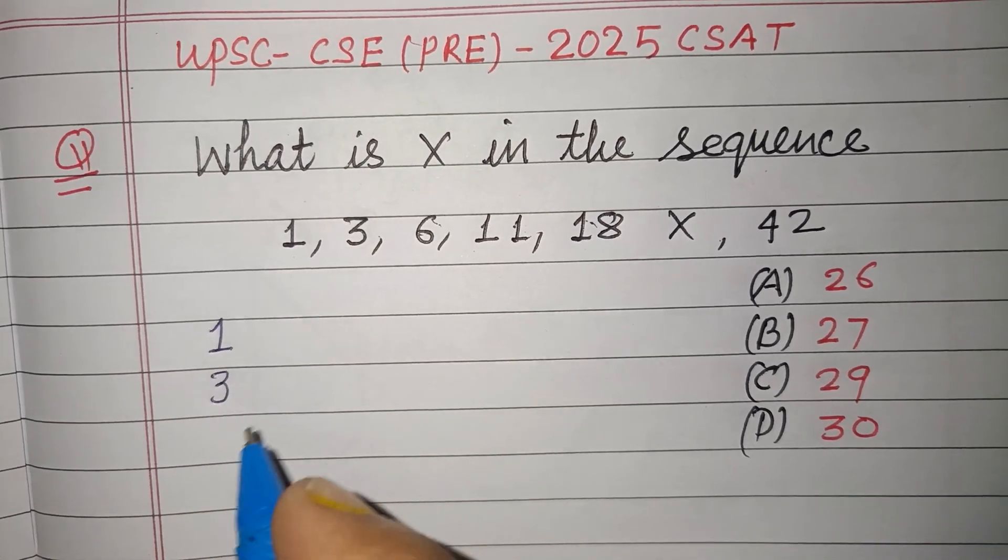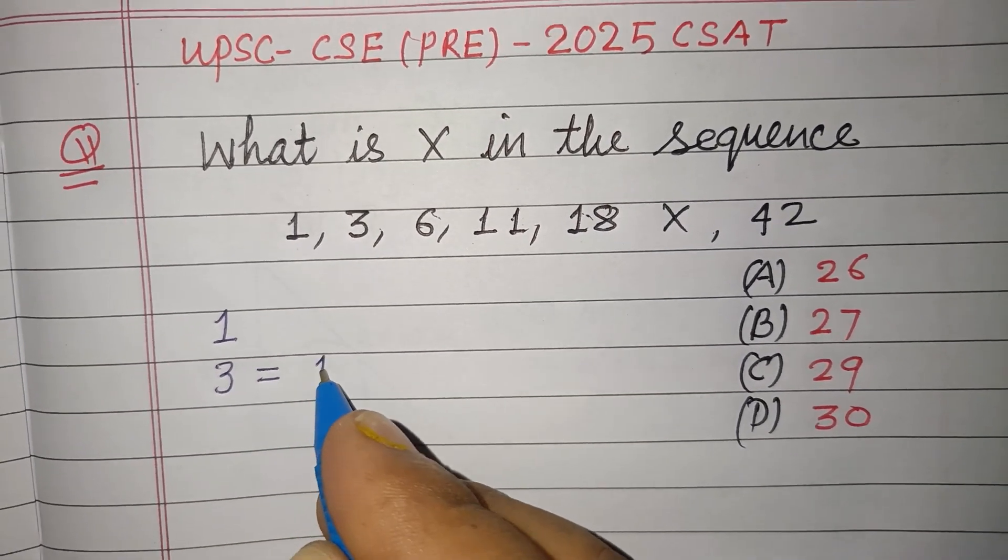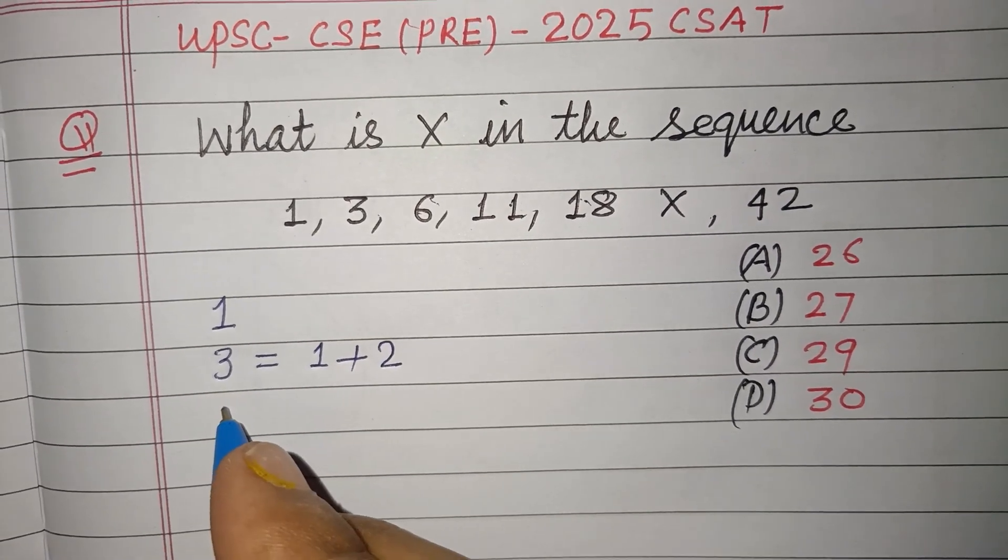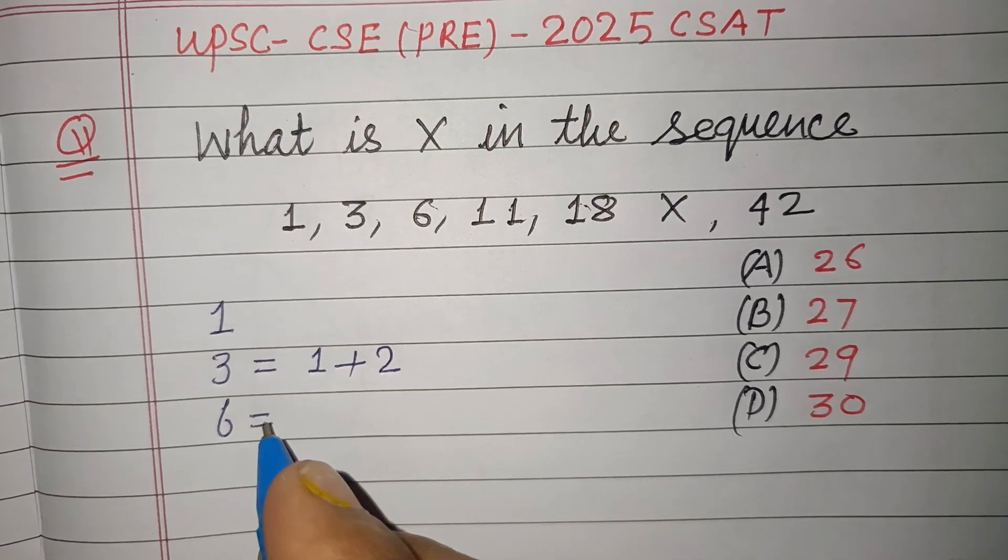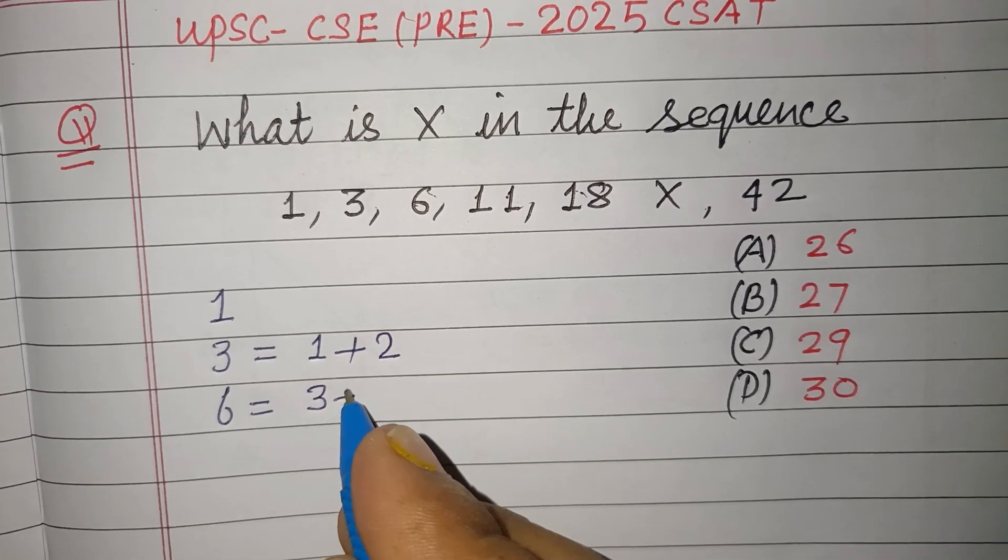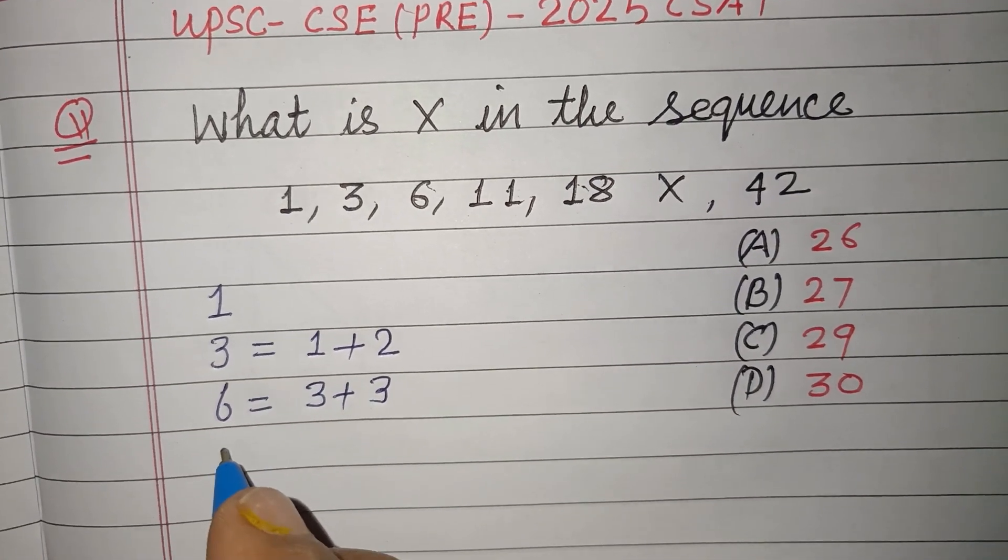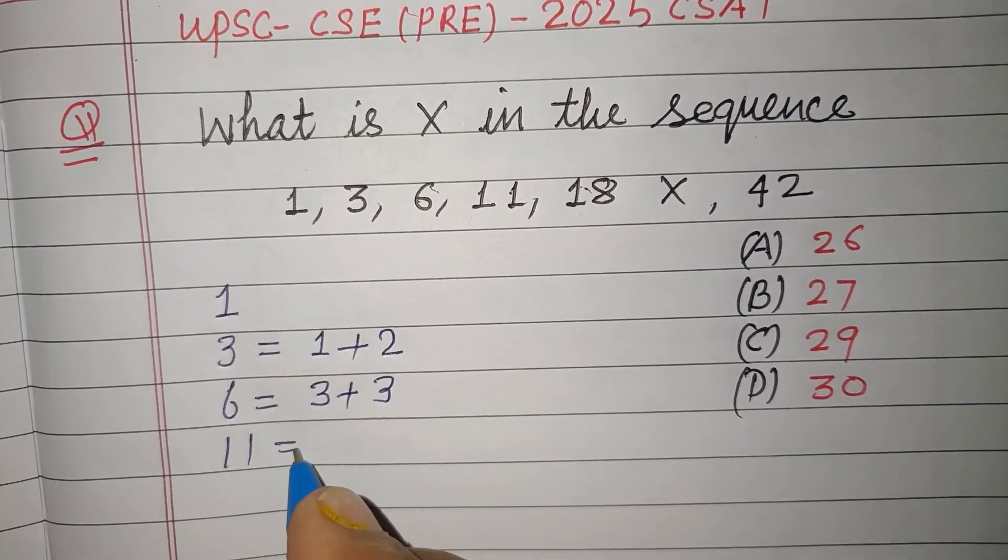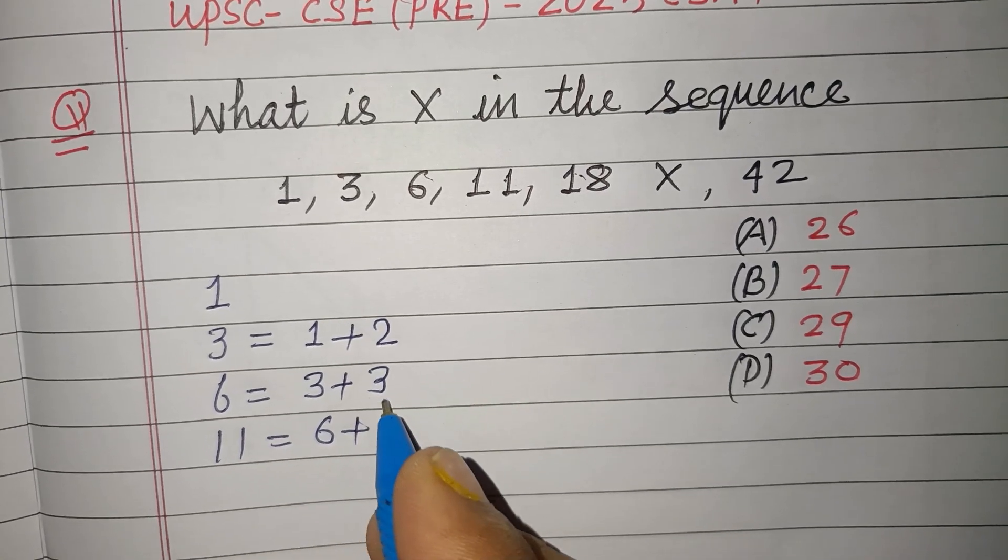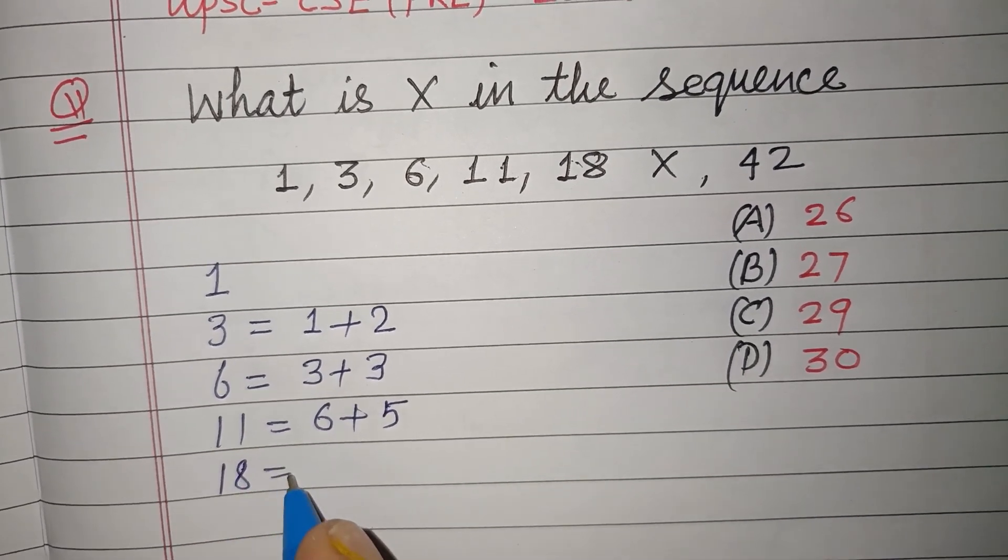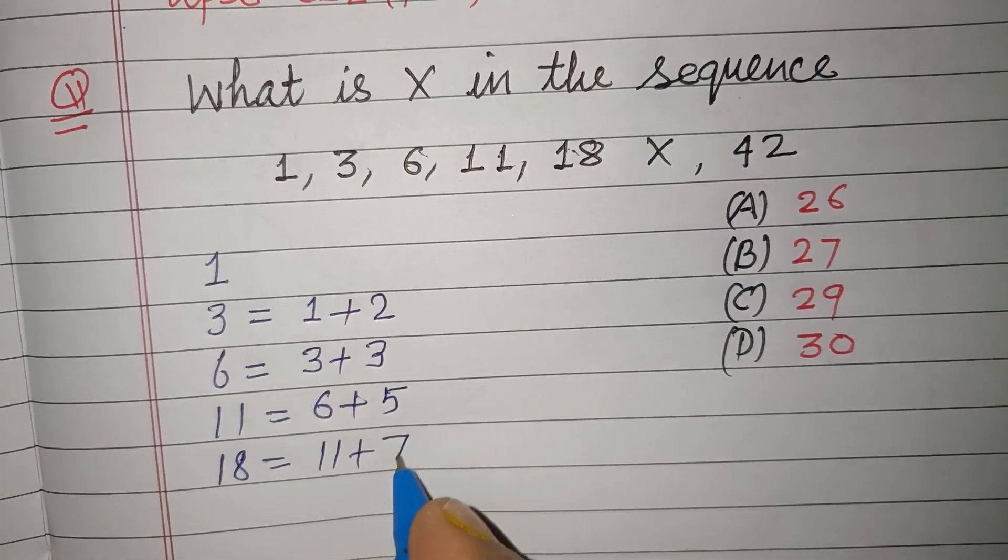The second term is 3, which is obtained after adding 2 to 1. The next term is 6, which is 3 plus 3. Then 11, which is 6 plus 5. And 18, which is 11 plus 7.